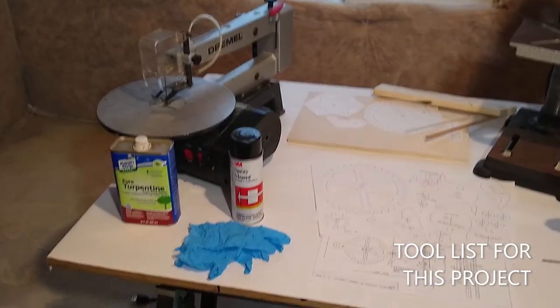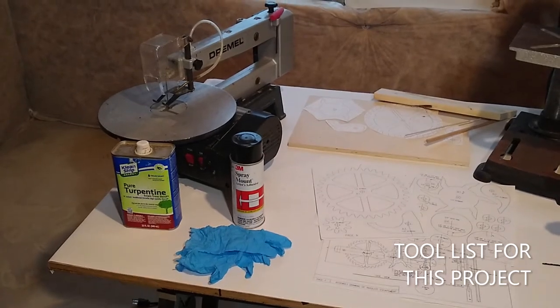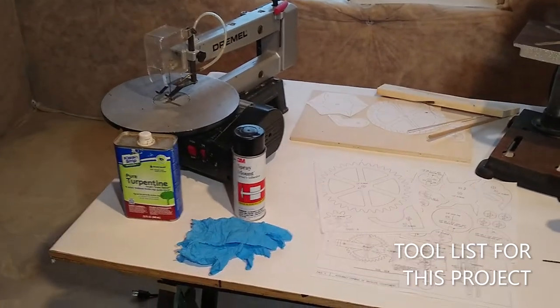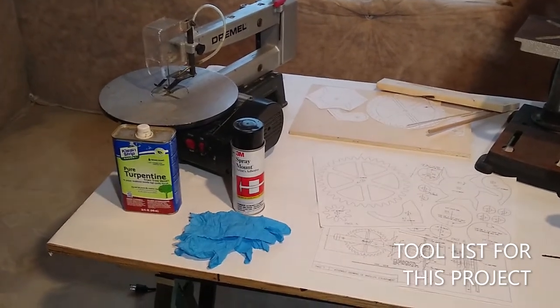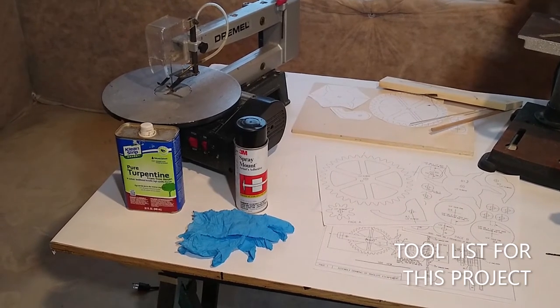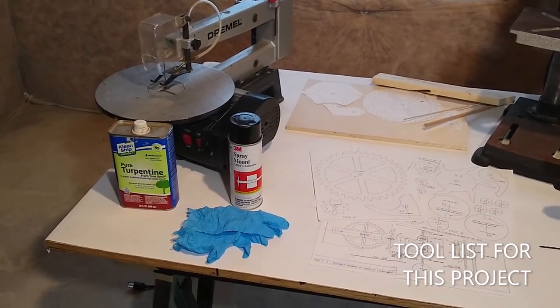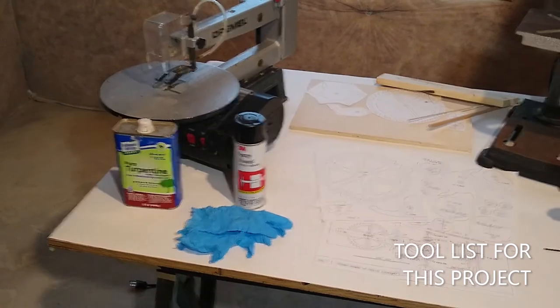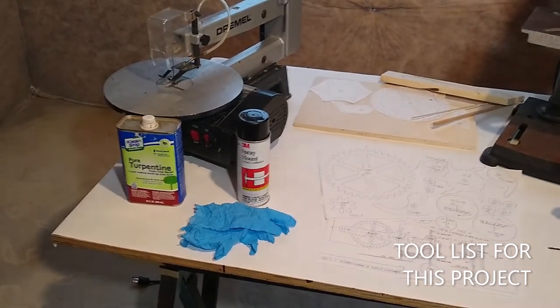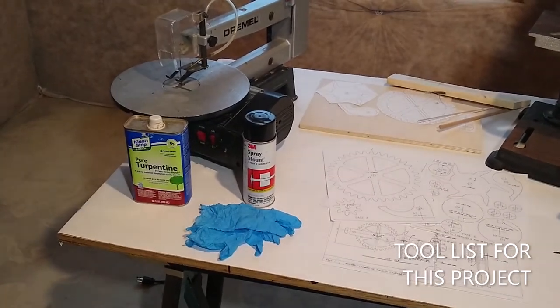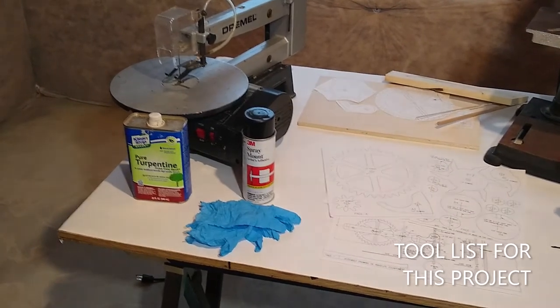Right there is a scroll saw, and in front of it there is some turpentine, and there's a spray adhesive in that can there, and it is to spray on the wood, and then we'll spray the back of these paper patterns, and then adhere the patterns to the wood.